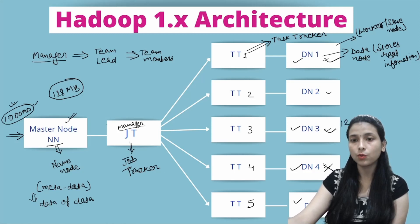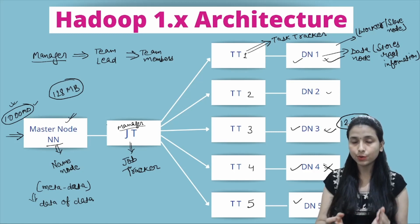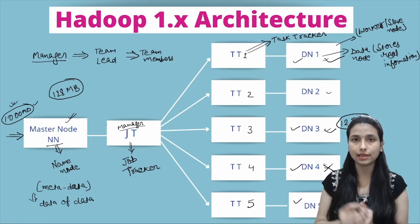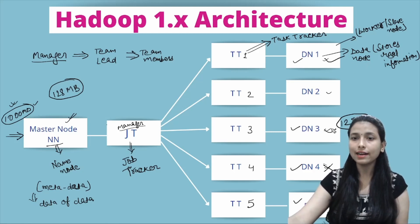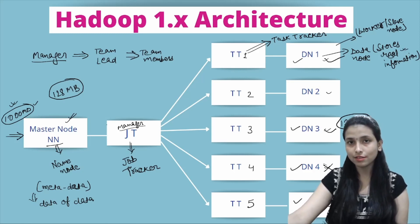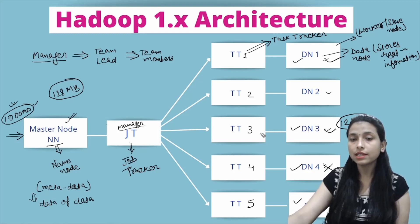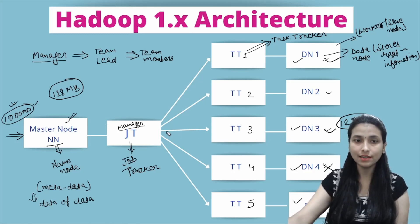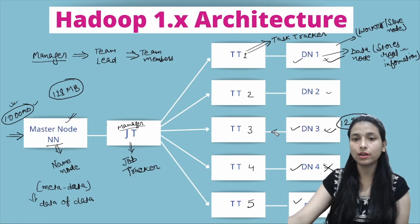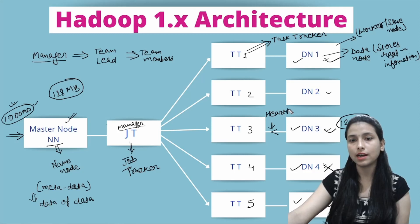For example, Data Node 3 receives 128 MB of file and processes and stores that data. As mentioned, the Data Node is responsible for storing the real information. While storing, the Data Node keeps sending a heartbeat signal to the Job Tracker to indicate it is alive and actively storing data.